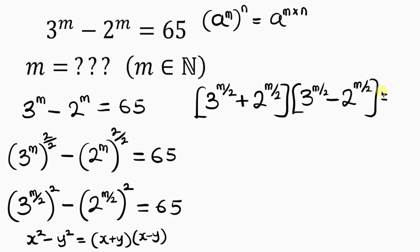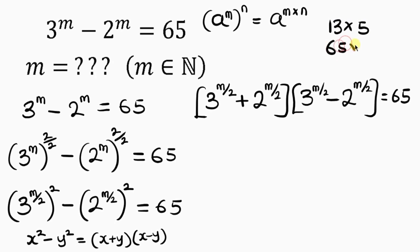Very good. Now I have one factor multiplying another factor to give 65, so I need to split 65. The factors must be natural numbers. We have 1 × 65 = 65 and 13 × 5 = 65. So these are the two factor pairs we have for 65.